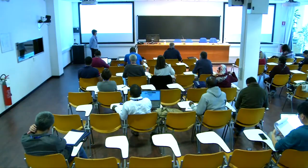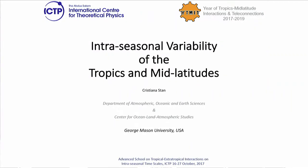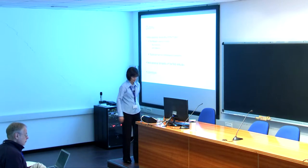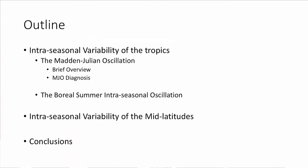The topics I'll cover will be very useful for your project and lab work. It's mostly some diagnostics for the tropics, focusing on variability of the tropics. The outline of my talk includes the Madden-Julian oscillation, a brief overview and some MJO diagnostics, the boreal summer intraseasonal oscillation, which is another component of intraseasonal variability of the tropics, and then the intraseasonal variability of the mid-latitudes with some new results from my current work, and then some conclusions.